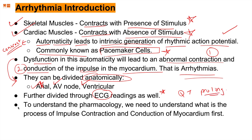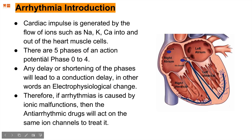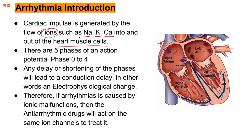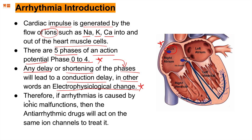To understand pharmacology, we first need to understand the process of impulse contraction and conduction. Cardiac impulse is generated by flow of ions — sodium, potassium, calcium — into and out of heart muscle cells. The SA node is able to present the heart with an electrical current because of these ions. There are five phases of an action potential, zero to four, that create this current. Any delay or shortening of these phases leads to a conduction delay — an electrophysiological change. Therefore, if arrhythmia is caused by ionic malfunctions, anti-arrhythmic drugs will act on those same ion channels.